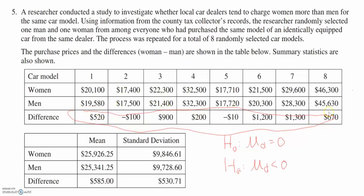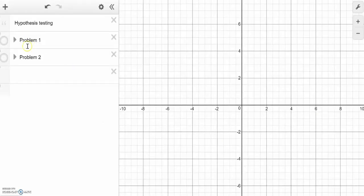And the question says, is there evidence that women pay more than men for the same model car? So our null and alternate are given here that the mean difference is equal to zero versus the fact that the mean difference is less than zero. So this is really a one sample test.